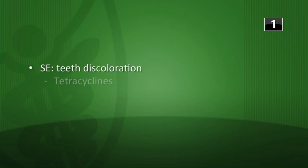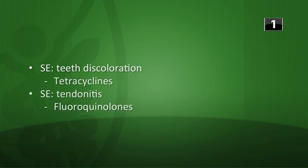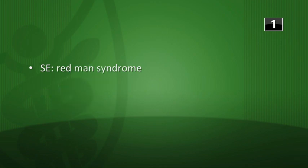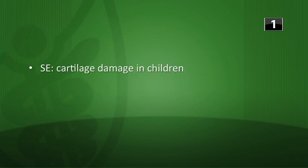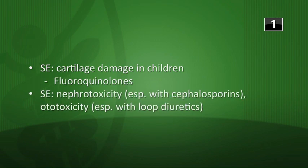It's time for the three-question warm-up for Biochem 1. Which antibiotic fits each description? Teeth discoloration is tetracyclines. Tendinitis is fluoroquinolones. Red man syndrome is vancomycin. Gray baby syndrome is chloramphenicol. Cartilage damage in children is again the fluoroquinolones. Side effects of nephrotoxicity, especially with cephalosporins, and ototoxicity, especially with loop diuretics, are the aminoglycosides.